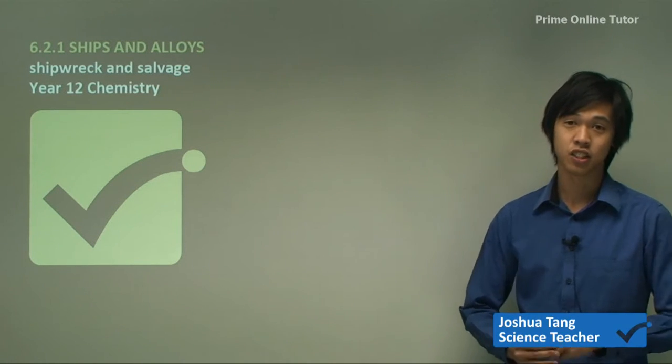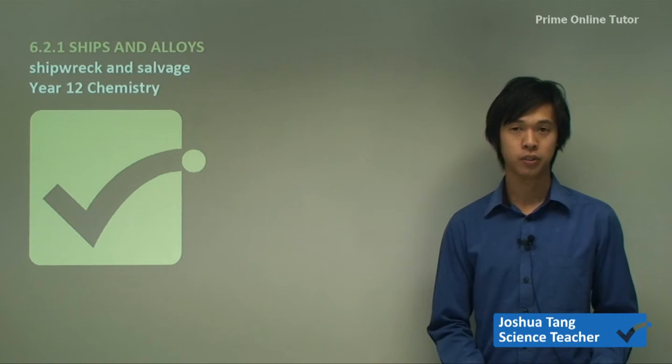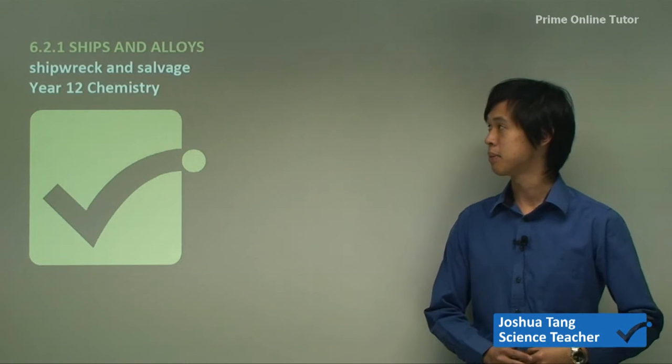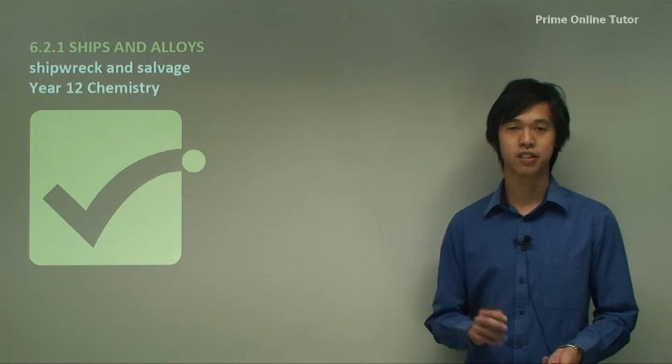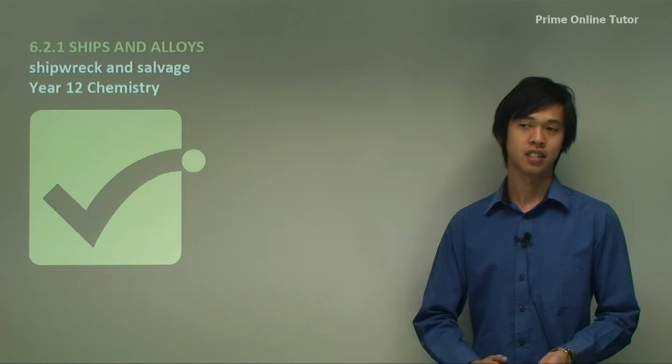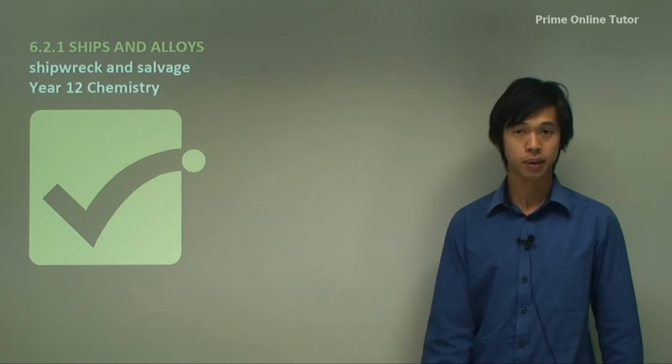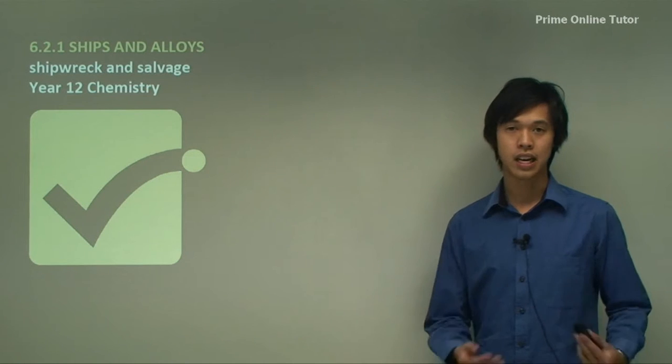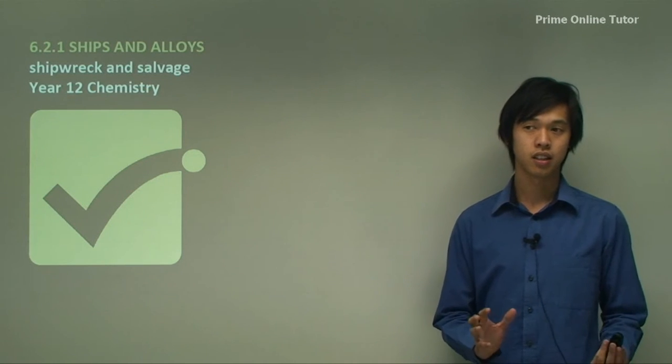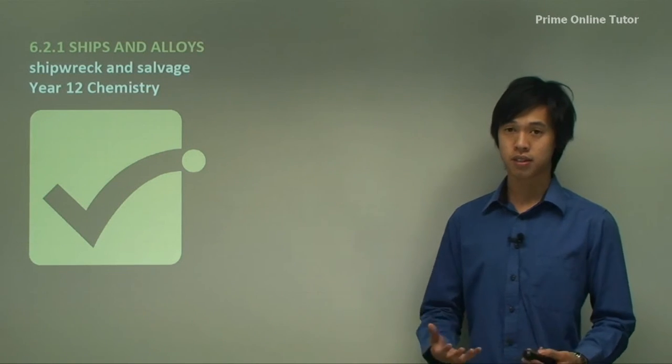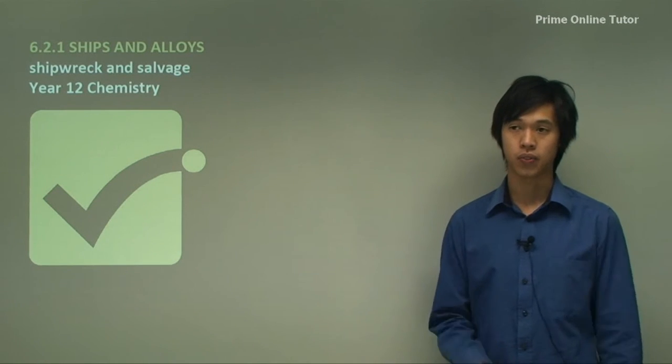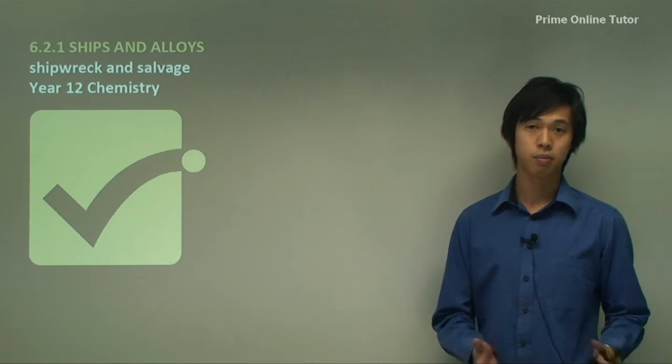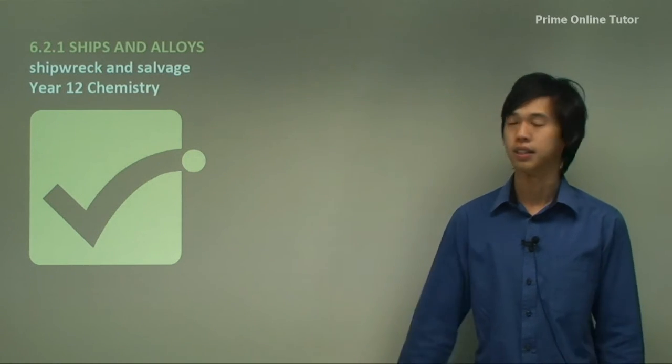Today's lesson will be on the shipwrecks and salvage option of the HSC chemistry syllabus. In previous lessons, we've done a recap of electrolytes, redox reactions, and some historical stuff about redox reactions. Now we're going to start looking at the chemistry of ships. In particular, we're going to be looking at ships and alloys, and why certain materials are picked in favor of other materials.